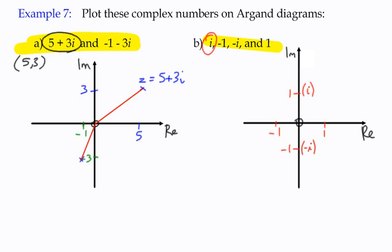So that's our Cartesian Argand diagram, and you should be able to plot a complex number on a diagram like this. Go and practice that — make sure your diagrams are really neat with straight, well-marked lines.